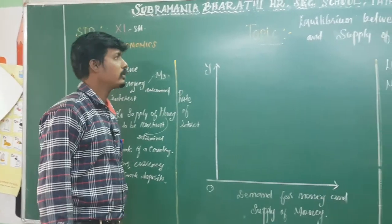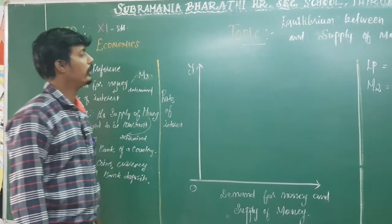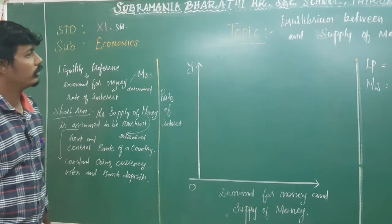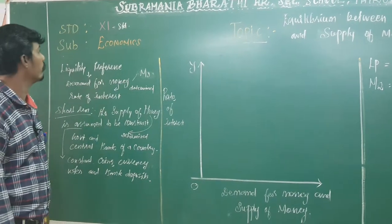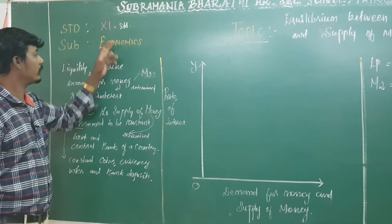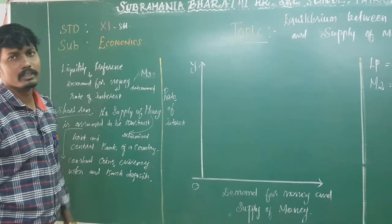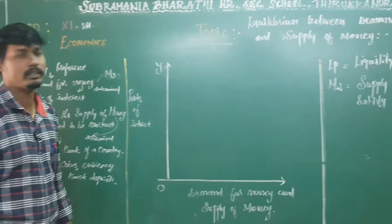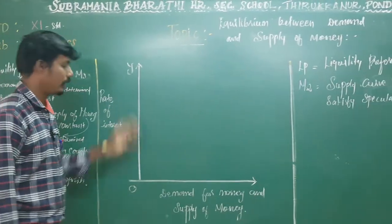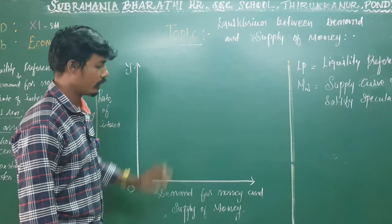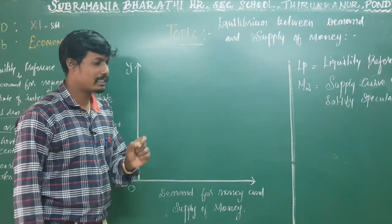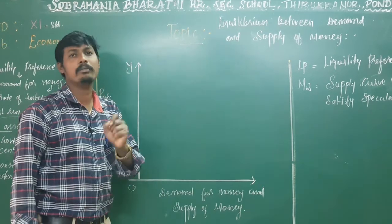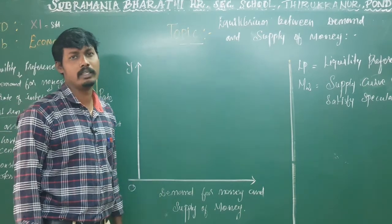Dear students, now we are going to cover the topic for 11th Grade Economics, Chapter 6, the Distribution Analysis — specifically Keynes' Liquidity Preference Theory of Interest.